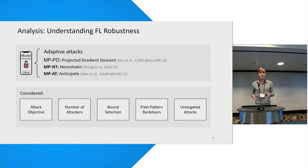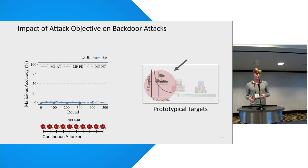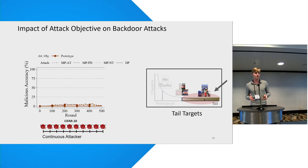To do this we compared three state-of-the-art targeted adaptive model poisoning attacks specifically designed to circumvent the norm bound. Looking at attack success as training progresses, we can see that for attacks on prototypical targets a suitable norm bound can actually successfully prevent the attack — of course when the bound is too loose, adaptive attacks do work. But for tail targets the behavior is different: the attack on tail targets is slowly being injected over time even when a norm bound is in place.